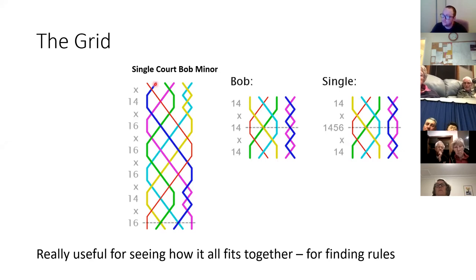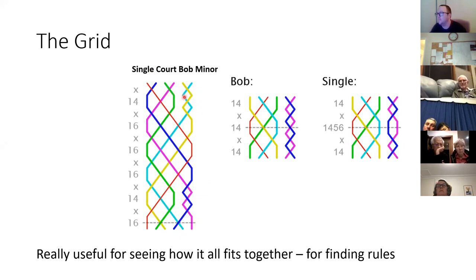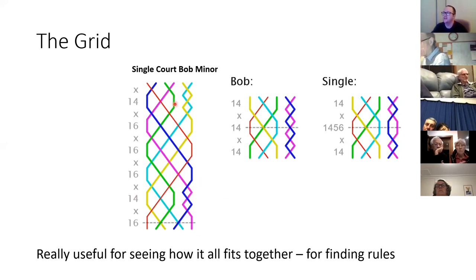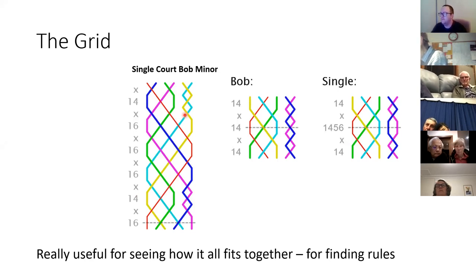We can also put all the lines together — it's not done very often but it's really useful for seeing how the method fits together. We've got the red line for the treble, blue for the two, and also pink, green, yellow, and gray lines. The pattern they create shows these X shapes — those are the dodges. We can see two bells dodging together here, and two different bells dodging here. We can generate rules just by looking at what everything's doing together — for example, when one bell is making fourths the bells behind it are dodging.